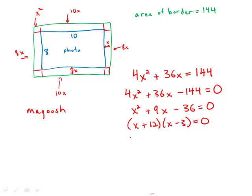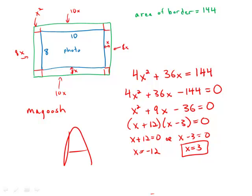Continuing on with the factoring — we know that if the product is zero, then one of the factors is zero. X equals negative 12 is not a possibility, but X equals 3 is a valid solution, and that is the answer — that is the width of the border. Answer choice A.